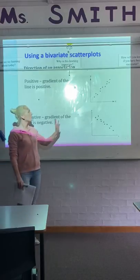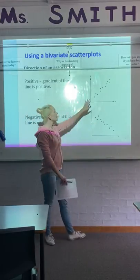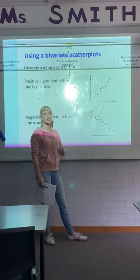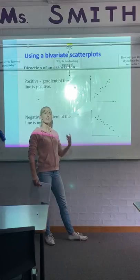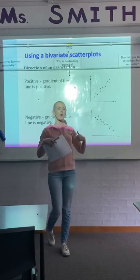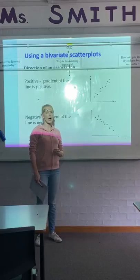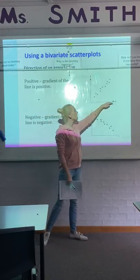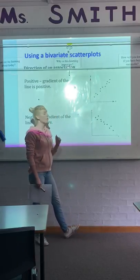An example of something that has a positive association would be age and height. Generally, as you get older, your height increases, or at least when you're an infant anyway. So as your age increases, so does your height. That would be an example of a positive gradient.